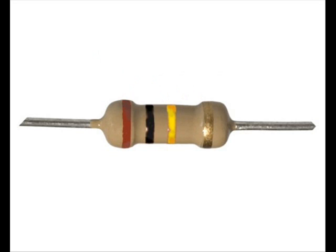From left, the first 3 color bands show the value of the resistor while the 4th color band shows the tolerance or accuracy.